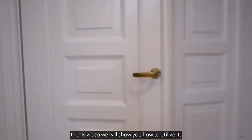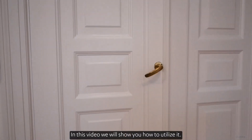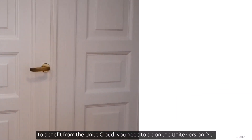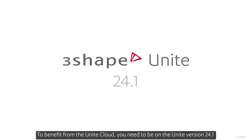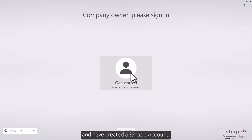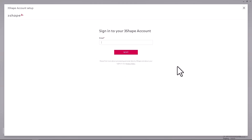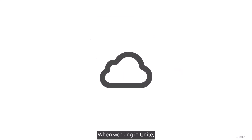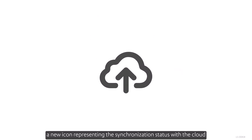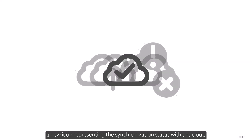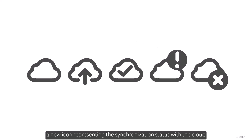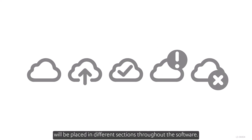In this video, we'll show you how to utilize it. To benefit from Unite Cloud, you need to be on Unite version 24.1 and have created a 3Shape account. When working in Unite, a new icon representing the synchronization status with the cloud will be placed in different sections throughout the software.